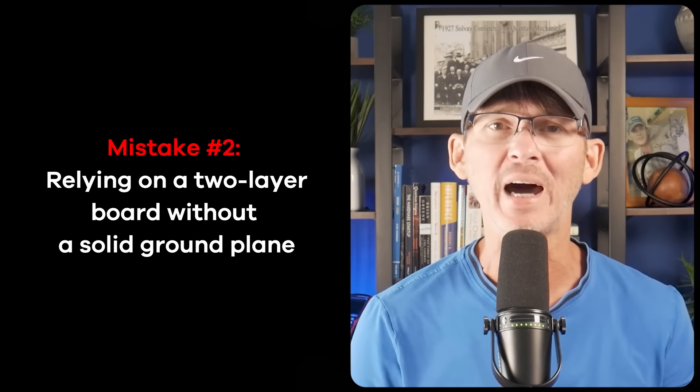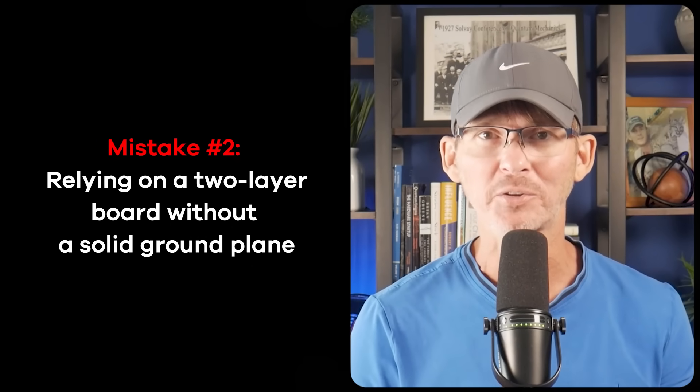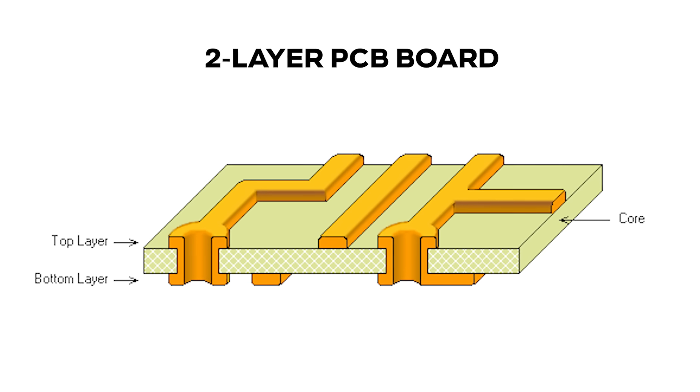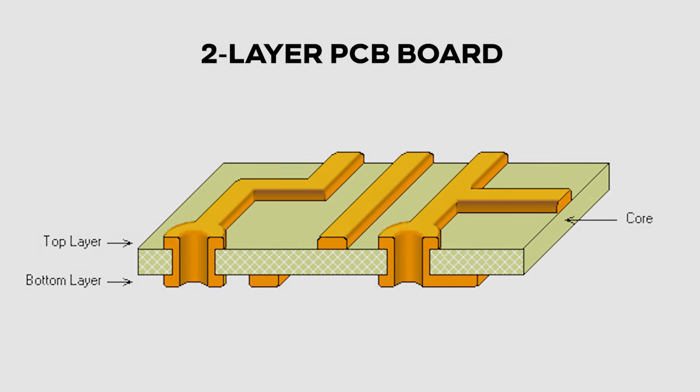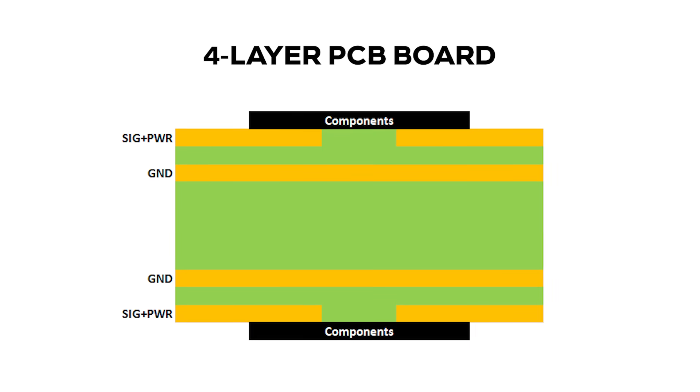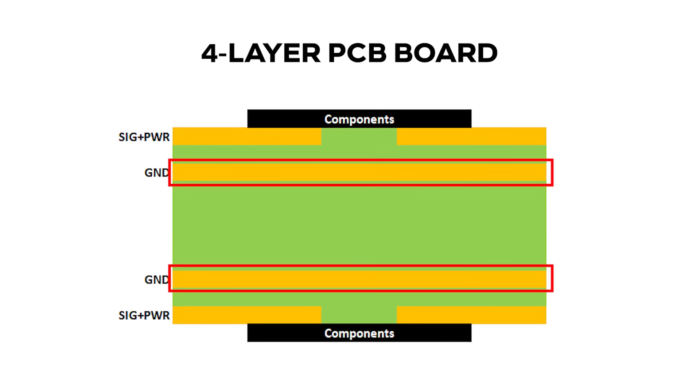Mistake number two is relying on a two-layer board without a solid ground plane. Two-layer boards are great for quick prototypes and low-cost dev boards, but when it comes to passing certification, they can often create more problems than they solve. They almost never provide a clean, continuous ground plane. In a four-layer board or more, you can dedicate an entire internal layer to ground, giving high-speed signals a consistent return path right underneath their traces and minimizing current loop area.